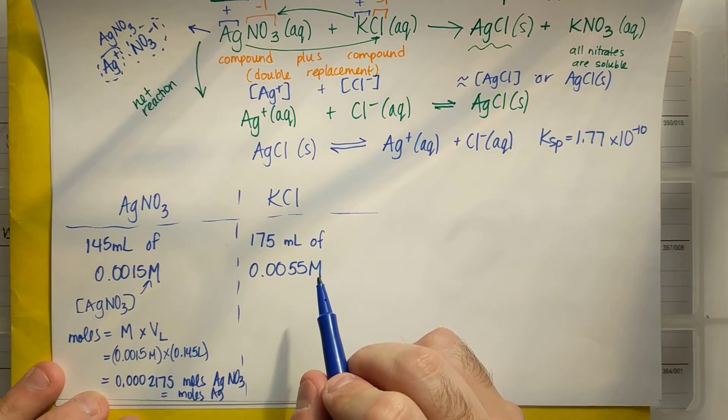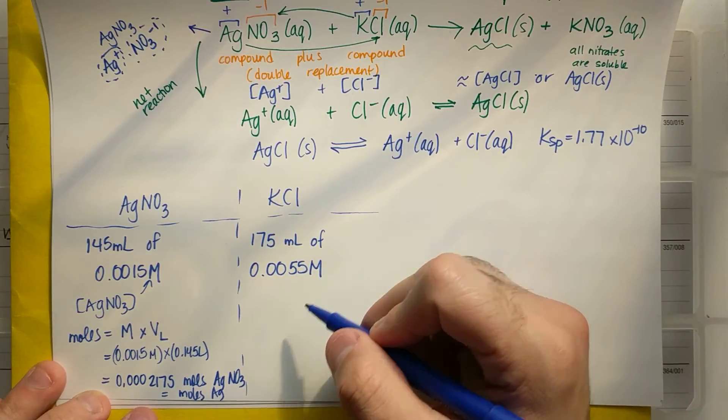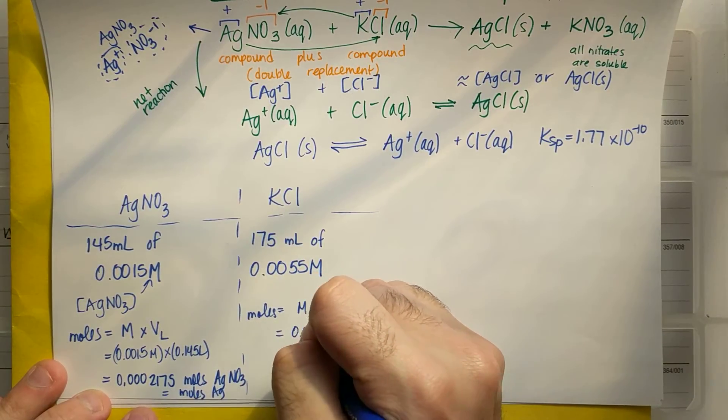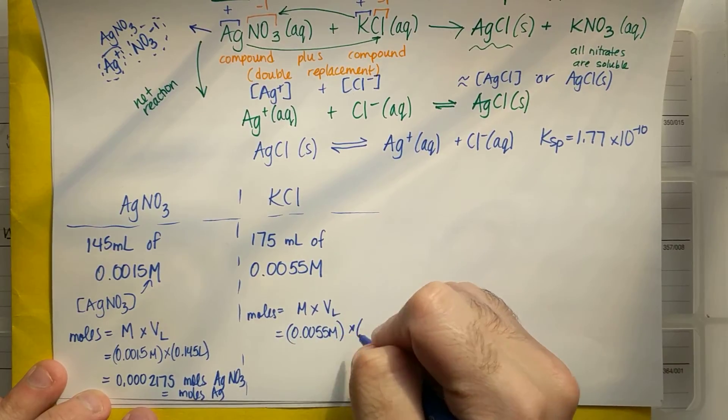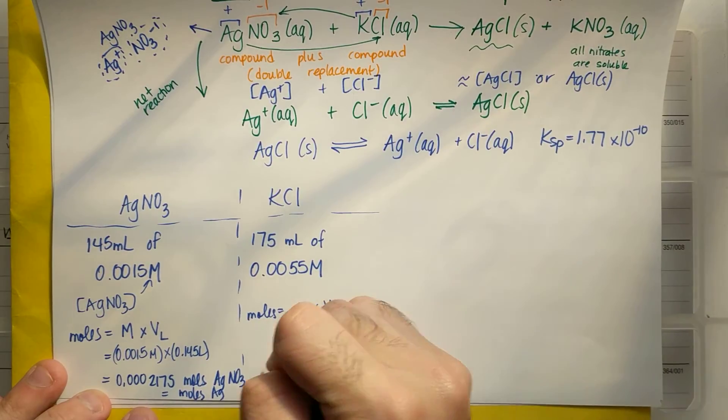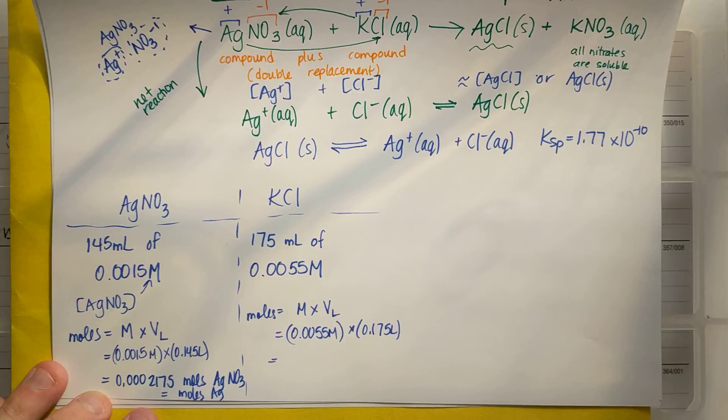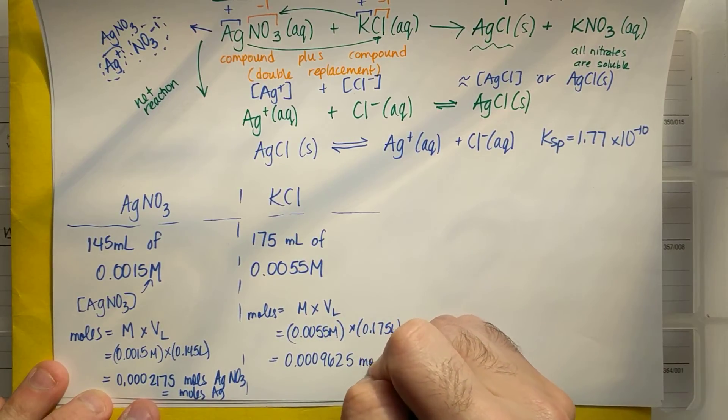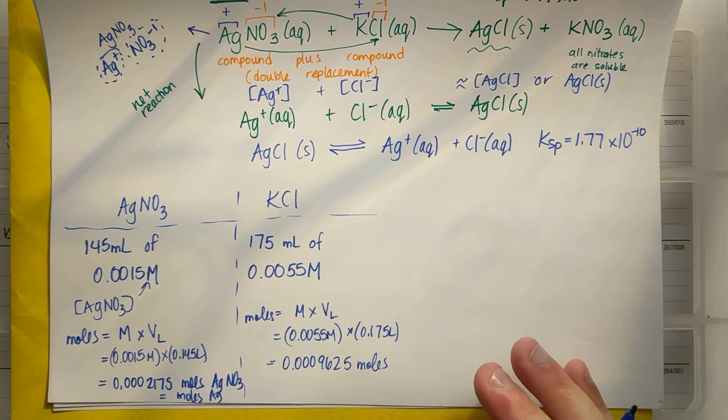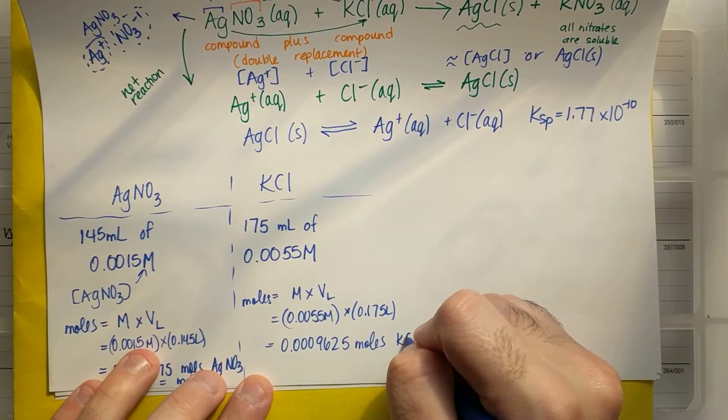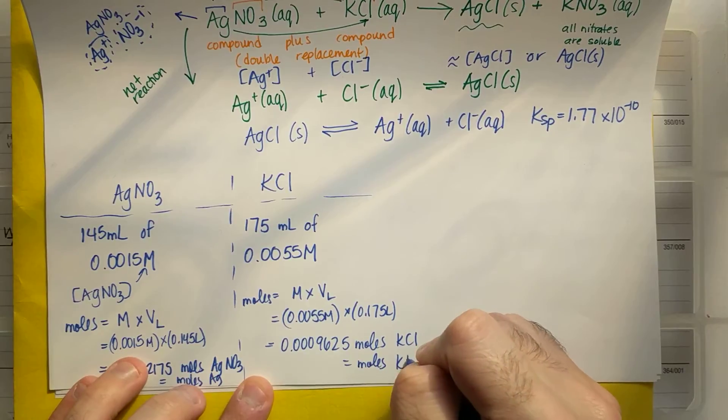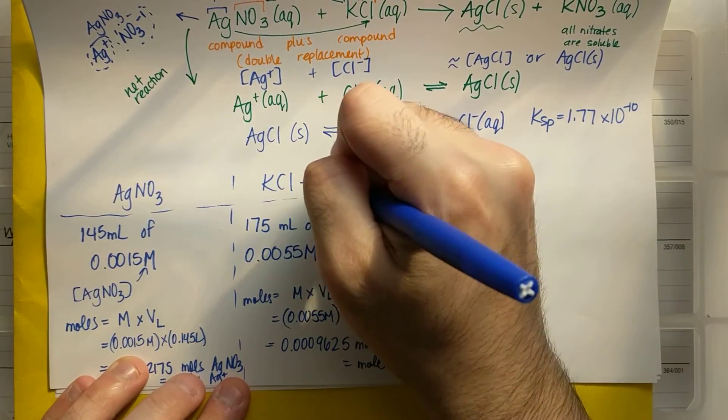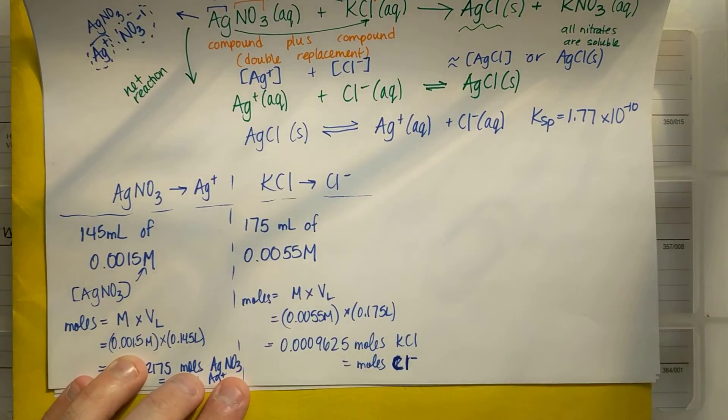And so now I'm gonna do the same thing with KCl. So if I have 175 milliliters of 0.0055 molar, I'll do moles is equal to molarity times volume in liters. So 0.0055 molar times 0.175 liters. And I end up getting 0.0009625. And these are from an old calculation. So please check my calculations, of course, but this is the correct setup. And so this is my moles of KCl, which is also gonna be equal to my moles of Cl minus. From KCl, I'll get my Cl minus. From AgNO3, I'll get my Ag plus. And now these are my moles.